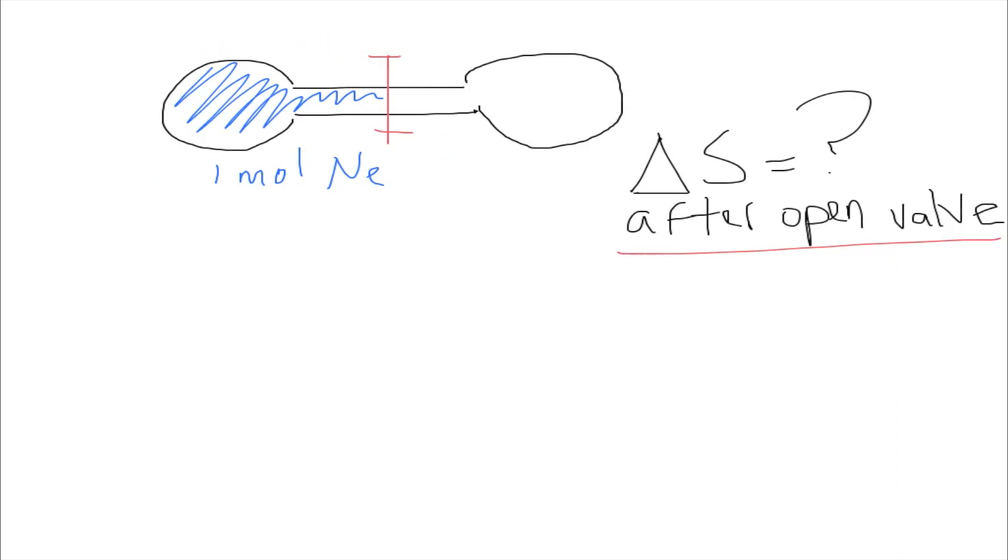So right here in this problem we have a gas in a valve. And in this portion of the valve the gas is present, but there is something closing it, making it impossible for the gas to pass to the other half of the valve. So in this case the gas is neon and we have one mole right here, and just on the right side there would be nothing.